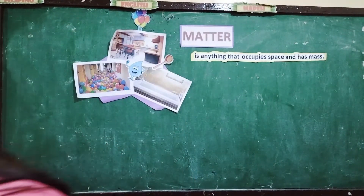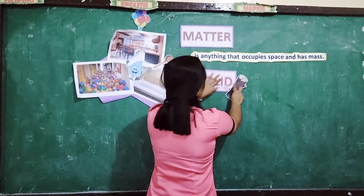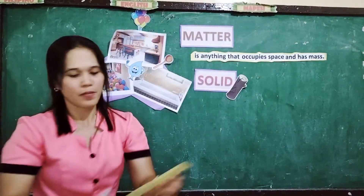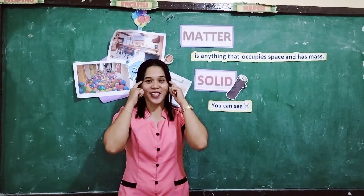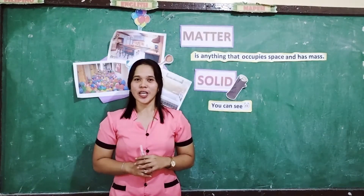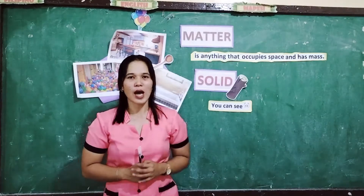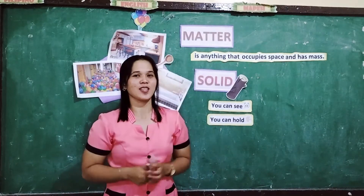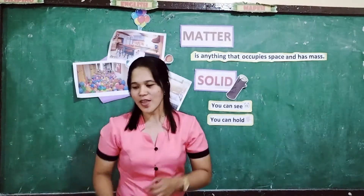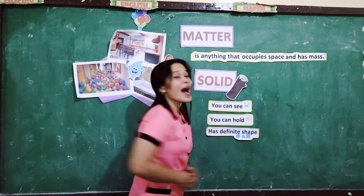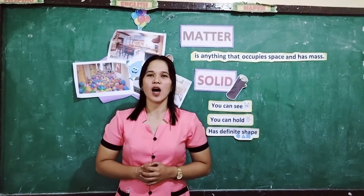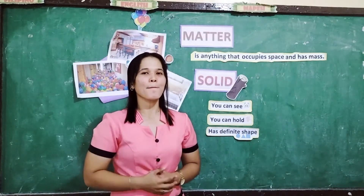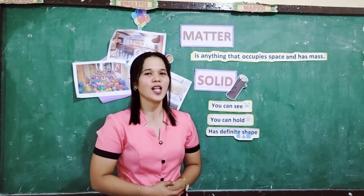First is the solid. The first characteristic of a solid is you can see it. The things that you mentioned earlier are some examples of solid. The next characteristic of a solid is you can hold it — you can hold the solid. The last characteristic is it has a definite shape. Examples of solid: notebook — it's an example of a solid. The clock — very good, it's an example of a solid.